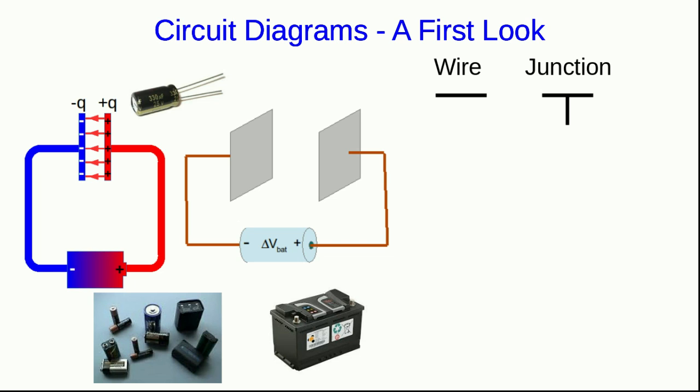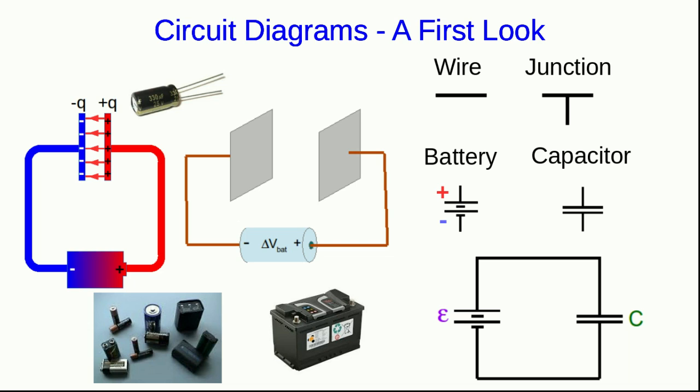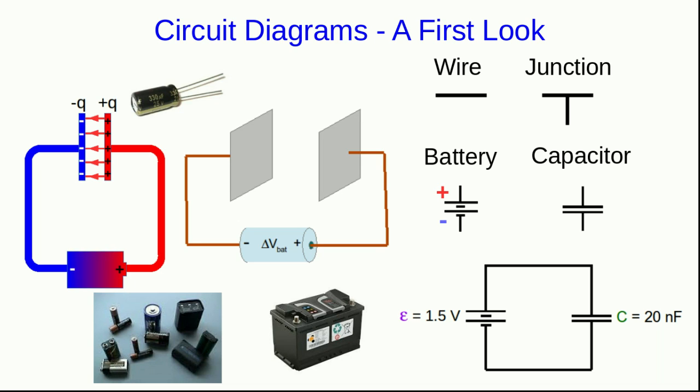But a battery is drawn this way. And by convention in this symbol, the large line corresponds to the positive terminal of the battery, and the small line corresponds to the negative terminal. And a capacitor just looks like a pair of plates. So under this set of conventions, this circuit of a capacitor with a battery would be drawn this way. Often when we draw a circuit diagram, if we know the EMFs of batteries, the capacitances of capacitors, and so on, we'll write them right on to the circuit diagram.